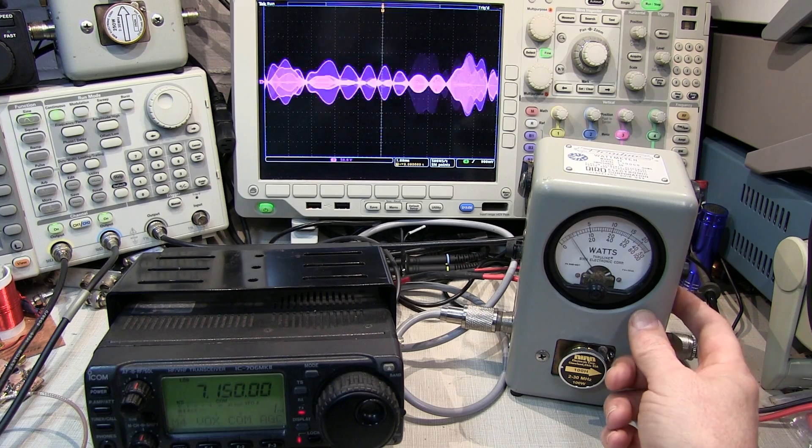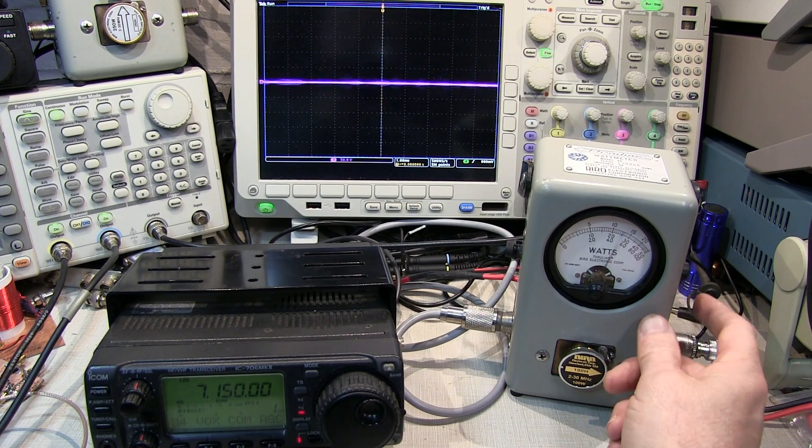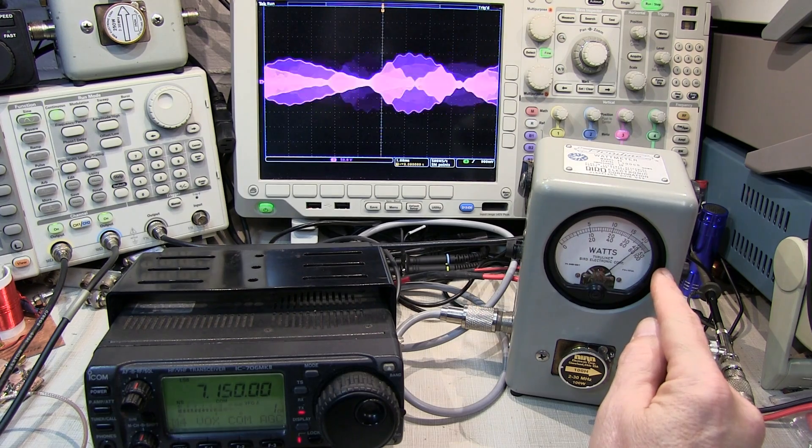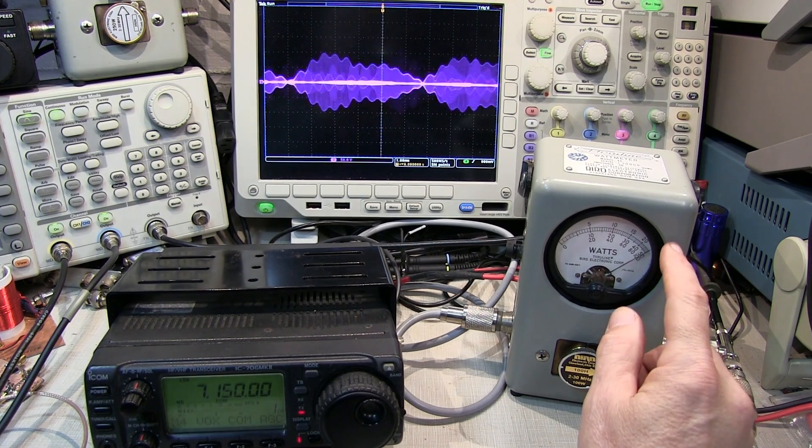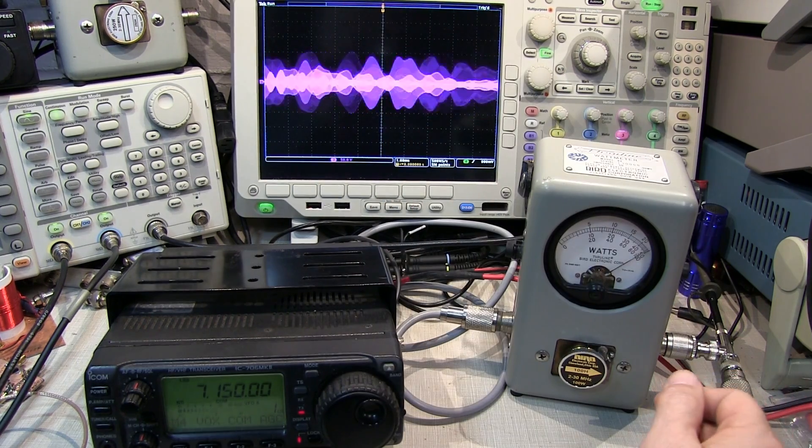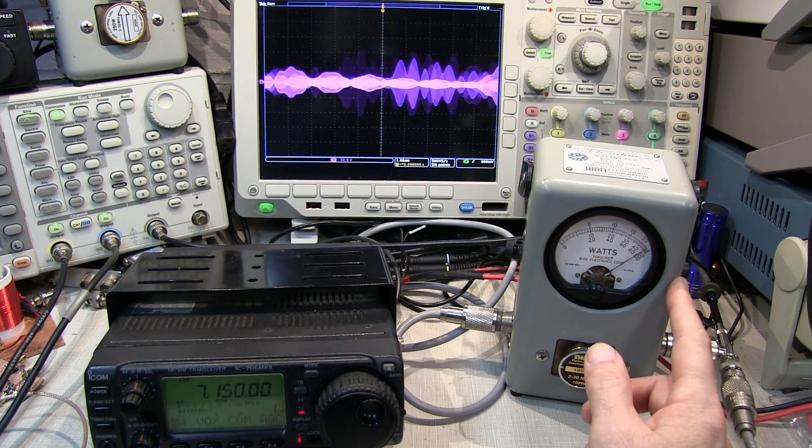Now this meter has got a peak responding circuit in it, and if I engage that, now I can actually see that I actually am achieving that full 100 watts peak envelope power because the peak detector in here is actually being able to follow the peak excursions of the RF envelope and be able to respond appropriately.